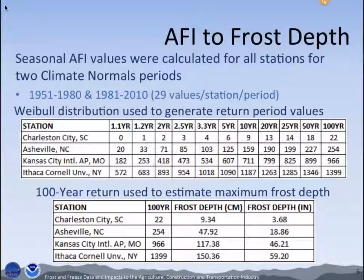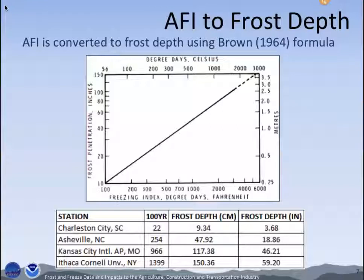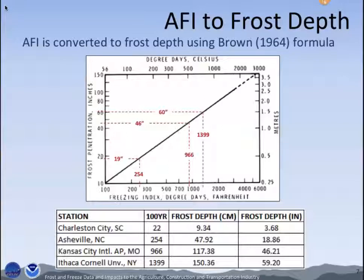We made this conversion from AFI to frost depth using research done by Brown in 1964. You can see on the table that he basically created this relationship between air temperature and frost depth. We were able to take that equation and apply it to the dataset automatically. If you were to plot the 100-year return values, you can see that the estimates are very similar — and they should be, because we're using the same equation.